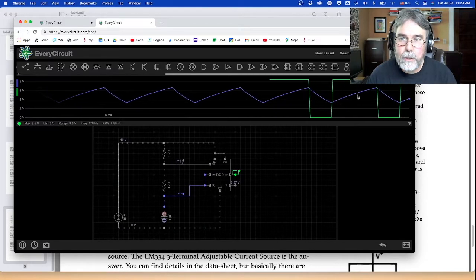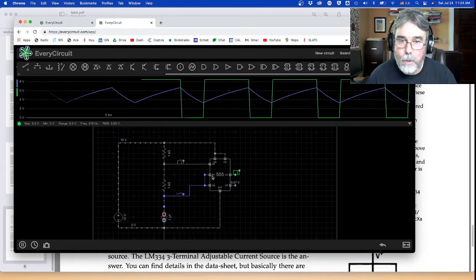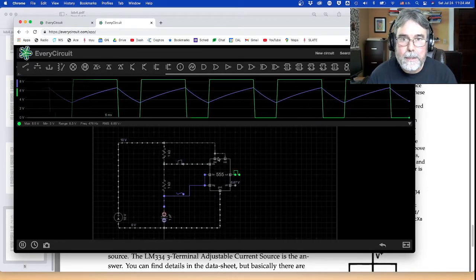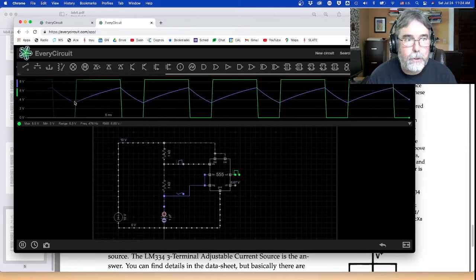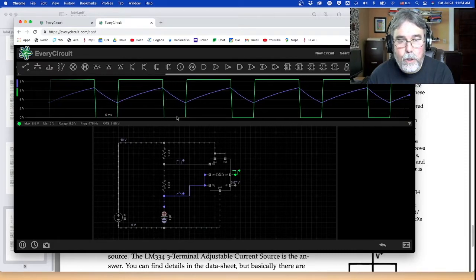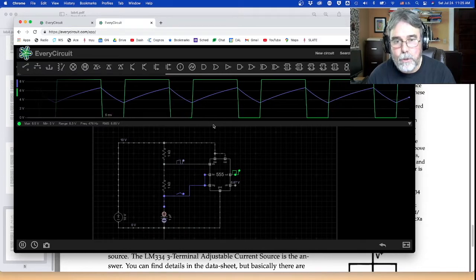So you can see when it's charging, memory is set to one. The output is high when it reaches two thirds of VCC, which is, it's 10 volts, two thirds of VCC is 6.67 volts. So the switch closes, the capacitor starts to discharge and the output goes low.